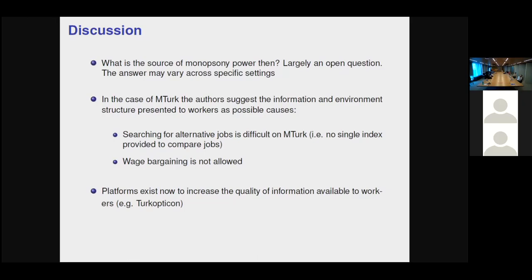The sources of monopsony power remain unclear. For this specific setting, proposed explanations include: the difficulty for workers to find alternative jobs due to no single job index at the time; the lack of wage bargaining on MTurk (unlike platforms such as Upwork); and the fact that workers face frictions in identifying substitute jobs. These constraints reduce workers' ability to switch employers and increase employer wage-setting power.